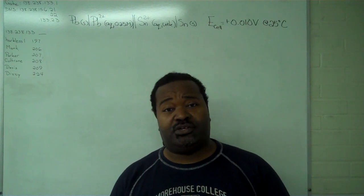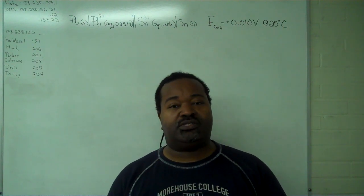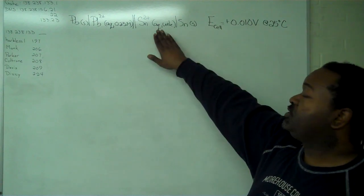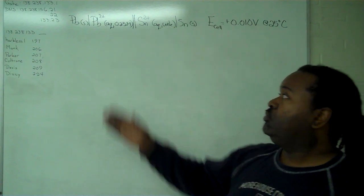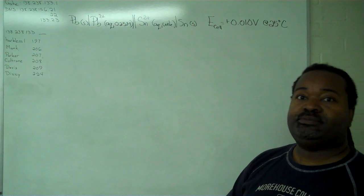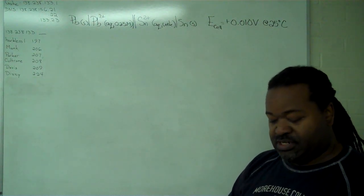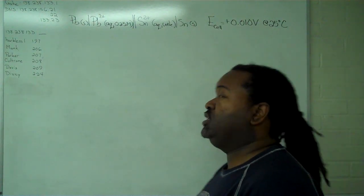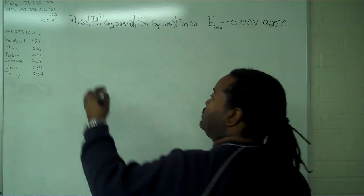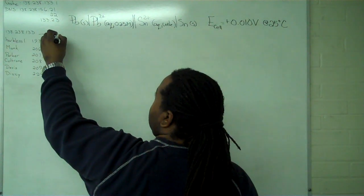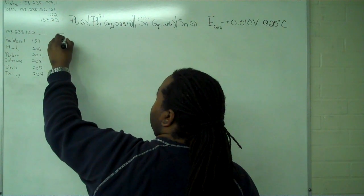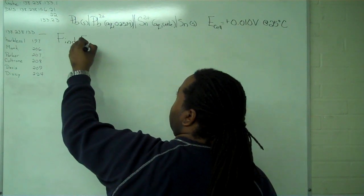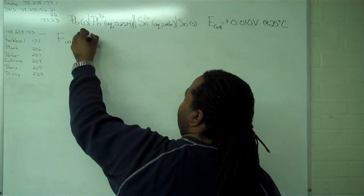This instructional video shows how to apply the Nernst equation to find the concentration of an unknown component in a voltaic cell. The first step, similar to finding non-standard cell potential, is to find E cell standard.